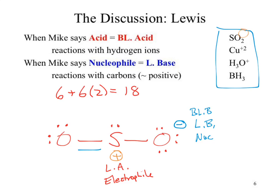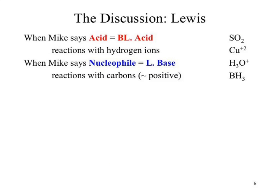Let's try an easier one — copper²⁺. How is Cu²⁺ going to act in our reaction? It's going to have to accept electrons because it's positively charged. There's no hydrogen so it can't be a Brønsted-Lowry acid; it can't be a Brønsted-Lowry base because it doesn't have electrons. So it has to be Lewis — it needs to accept electrons. Which Lewis definition accepts electrons? The Lewis acid. We're looking at an electrophile.